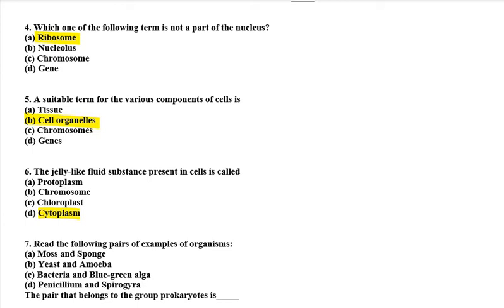Seventh question: read the following pairs of organisms — moss and sponge, yeast and amoeba, bacteria and blue-green algae, penicillium and spirogyra. The pair that belongs to the group prokaryotes is bacteria and blue-green algae, because prokaryotes do not have a nucleus membrane — they lack a well-organized nucleus. Therefore, bacteria and blue-green algae is the right option.